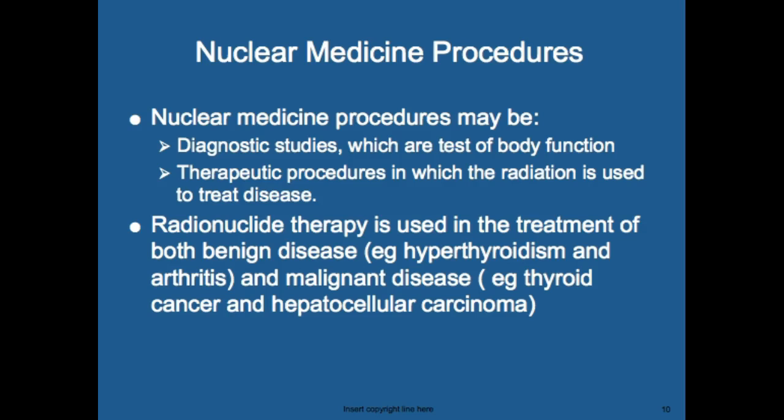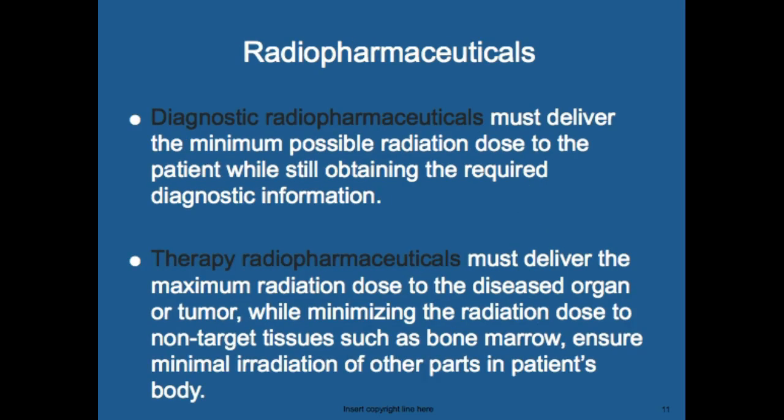Nuclear medicine procedures may be diagnostic, which are tests of body function, or therapeutic, in which radiation is used to treat disease. Radionuclide therapy is used for benign conditions like hyperthyroidism and arthritis, and malignant diseases such as thyroid cancer and hepatocellular carcinoma. Diagnostic radiopharmaceuticals must deliver the minimum possible radiation dose while obtaining required diagnostic information, whereas therapeutic radiopharmaceuticals must deliver the maximum radiation dose to the diseased organ or tumor while minimizing dose to non-target tissues such as bone marrow.